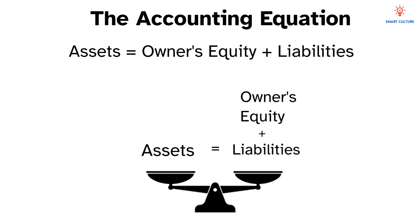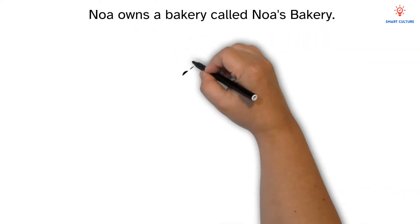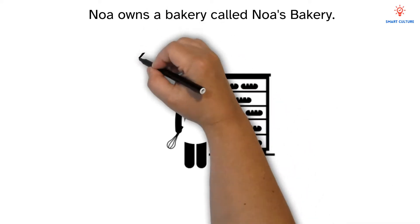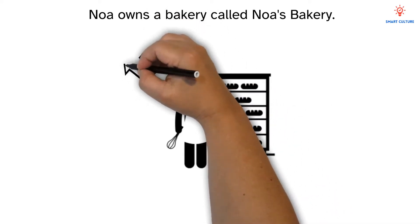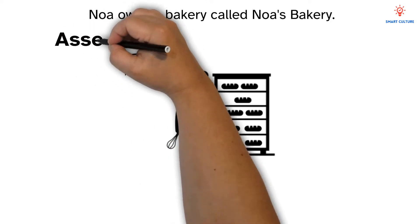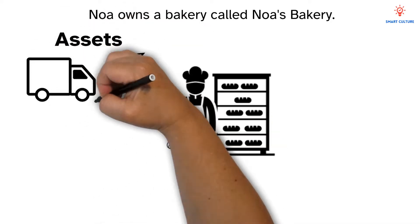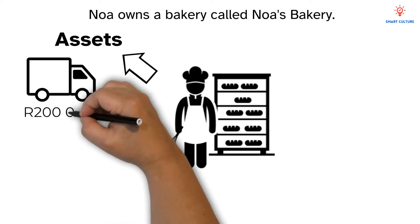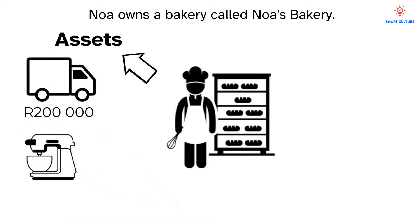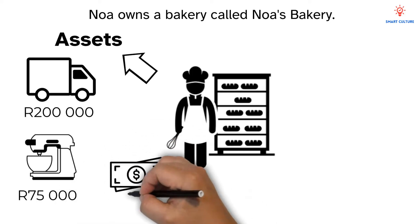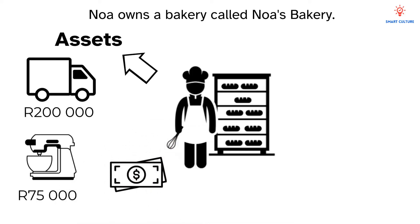Noah owns a bakery called Noah's Bakery, a small business that makes delicious treats for the community. Noah owns some valuable things for the bakery — these are called assets. Noah's assets include a delivery van worth 200,000 rand, bakery equipment worth 75,000 rand, and 150,000 rand in the bank.